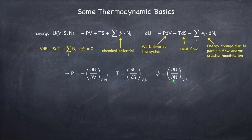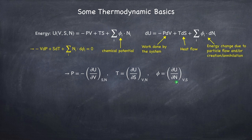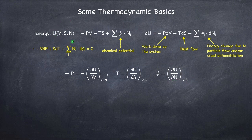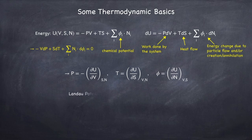This last expression for phi helps us understand what the chemical potential is. We can see that this is the change in energy as you change the particle number while keeping entropy constant. So the chemical potential is the energy required to add one particle to the system without changing the entropy. It turns out that this definition of energy, while perfectly sound, is not always the most useful one, so instead I'm going to define a new type of energy called the Landau potential.